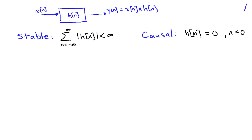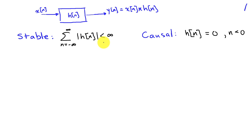Recall that if I have a system with an impulse response H of n, and I pass an input X of n into that system, then my output Y of n is a convolution of X of n with H of n. And for stability, the impulse response has to be absolutely summable — in other words, the sum from minus infinity to infinity of the absolute value of H of n has to be less than infinity.